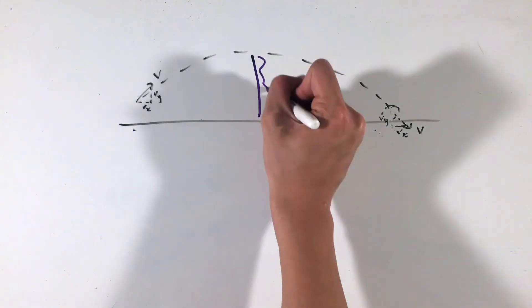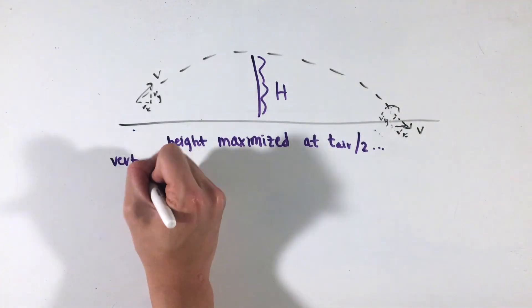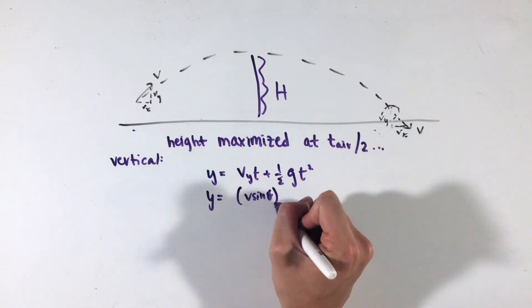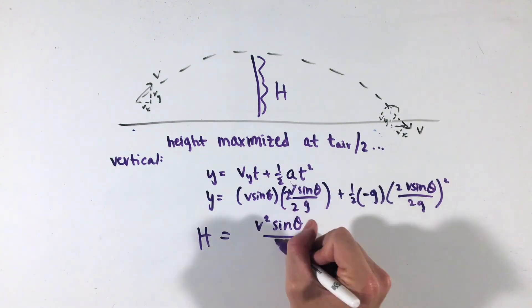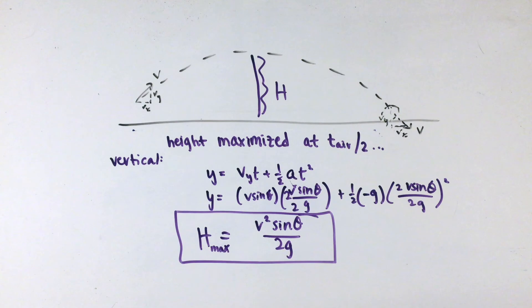In a similar branch of thought, the object's peak height should occur at half of this airtime, due to the symmetry of its parabolic path. Plugging this time value into our old kinematic equation used in the vertical direction, we can also solve for the maximum height of the object's trajectory.